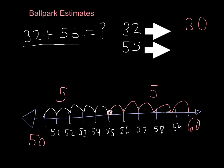But remember, if this is a 5, we are going to go to this side, to the right, or to the larger number. So we are going to round to 60.